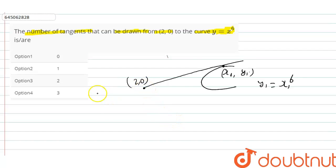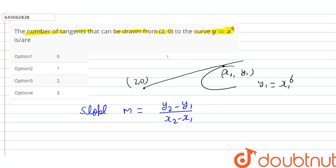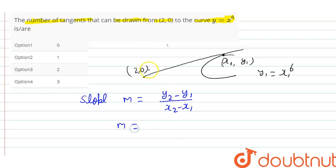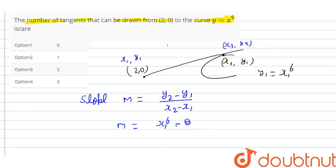Now we know that slope m equals (y2 − y1) / (x2 − x1). The slope of this tangent: y2 = x1⁶, y1 = 0, x2 = 2, x1 = x1. So slope m = (x1⁶ − 0) / (x1 − 2), which gives m = x1⁶ / (x1 − 2). This is equation 1.